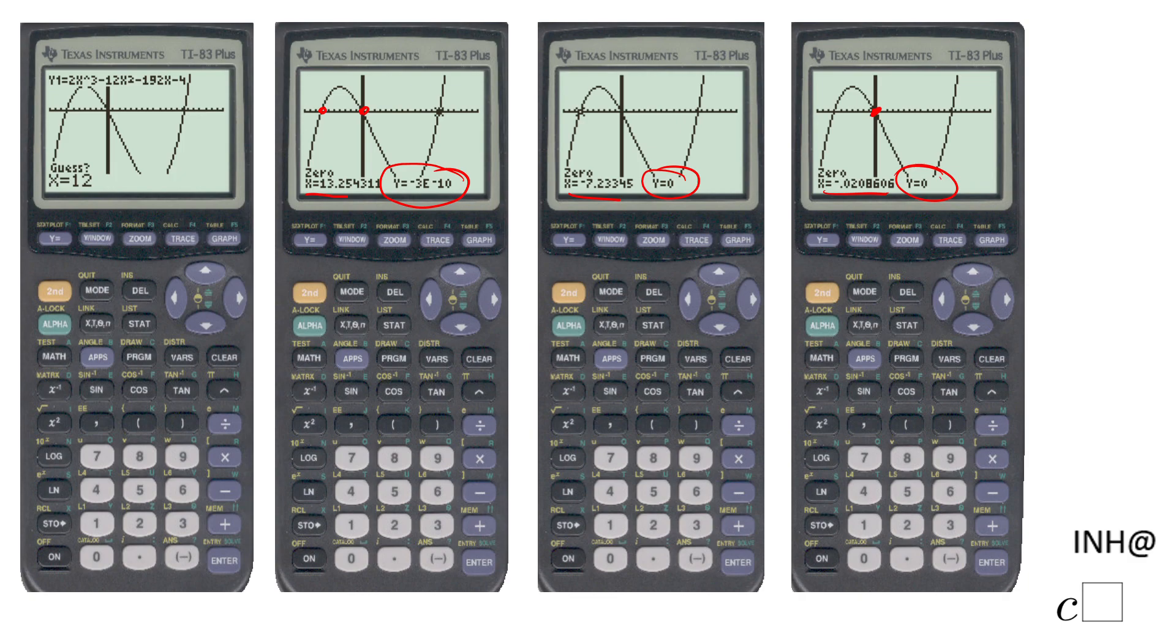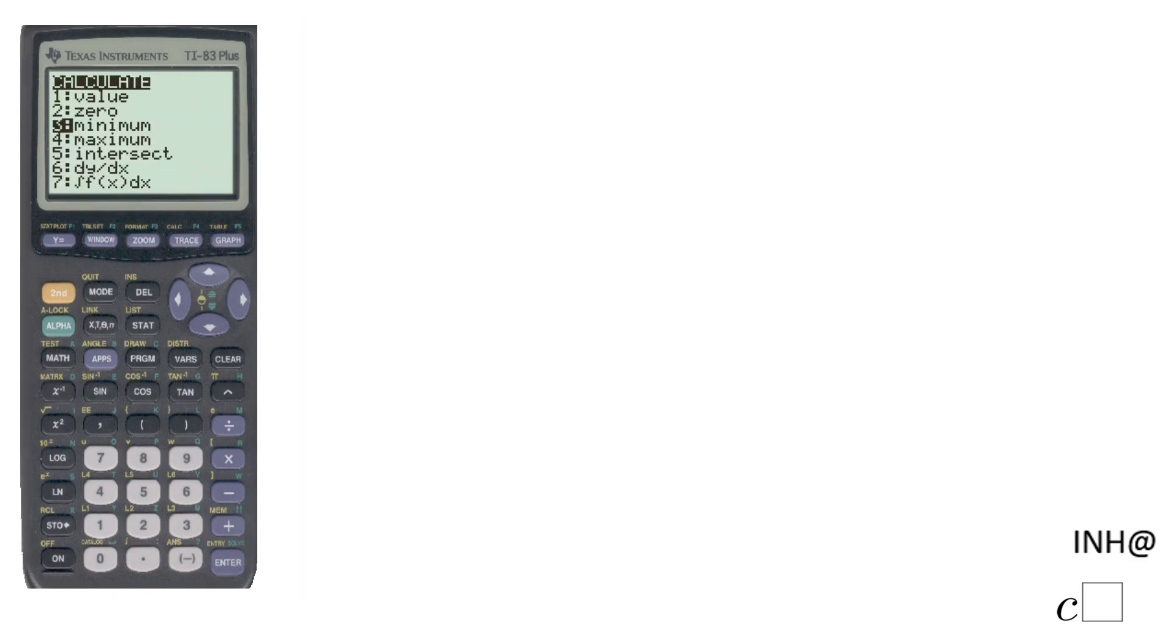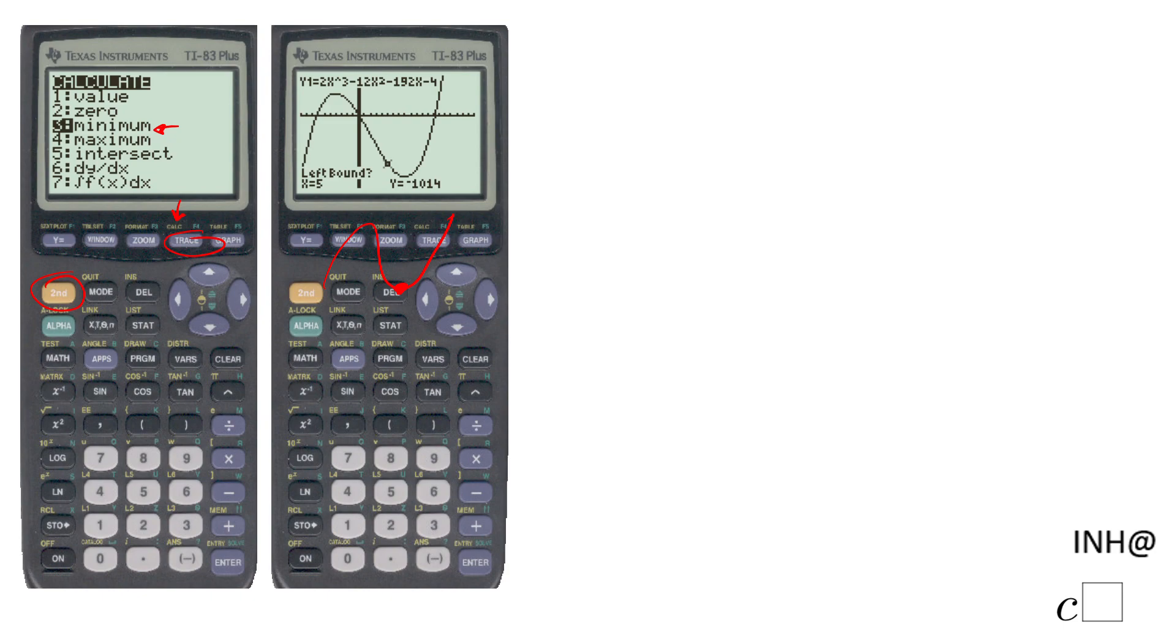On the second part of this clip, I'm going to talk about finding what we call the minimum and the maximum. And let's take a look. You notice again the Calc menu - how do you get it? Second Trace - and that's the Calc menu. And the third one is the minimum. If you remember, the function looks like that, so I'm going to look for this point, the relative minimum.